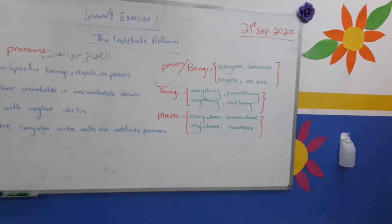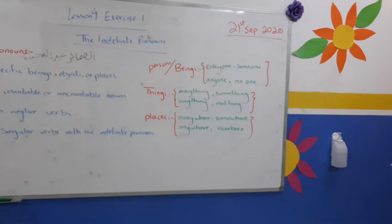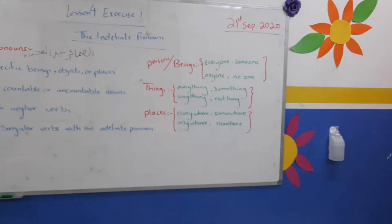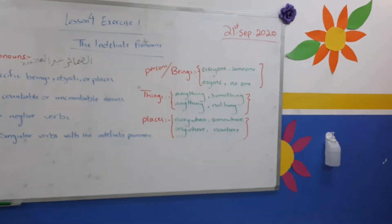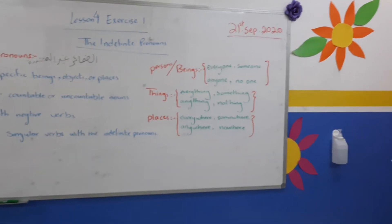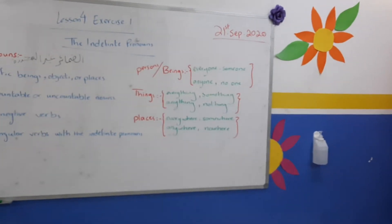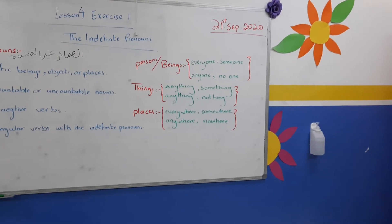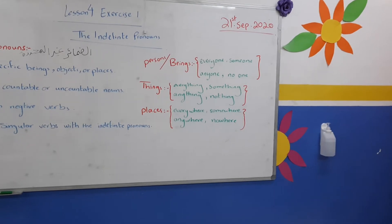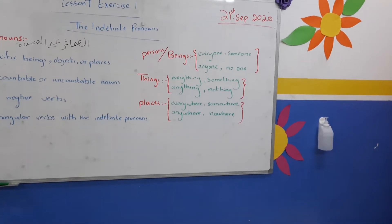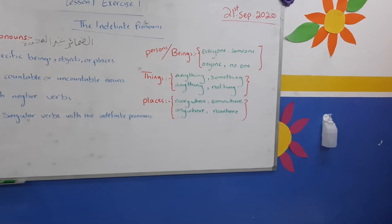The indefinite pronouns for beings are: everyone, someone, anyone, and no one. Notice that 'no one' is two words.